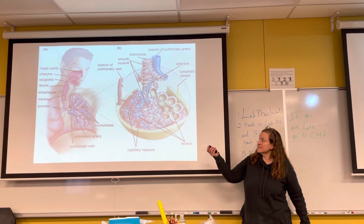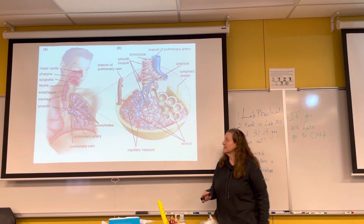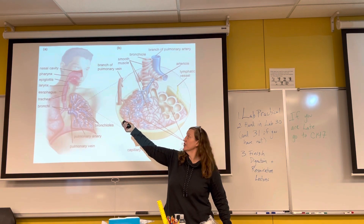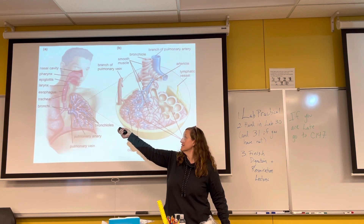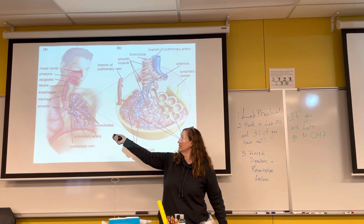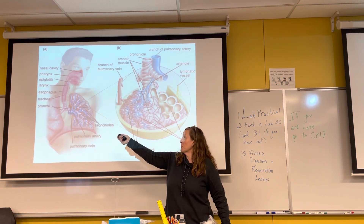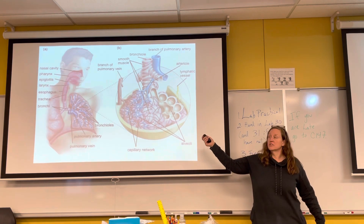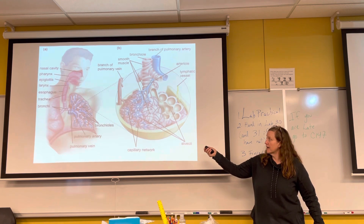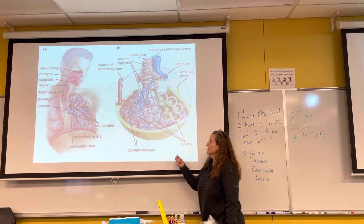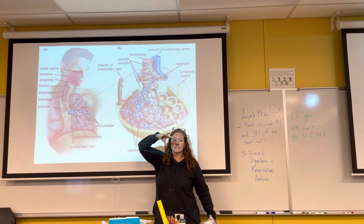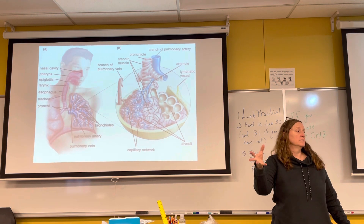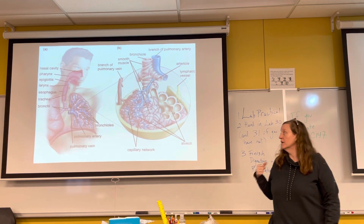This is what our respiratory system looks like — a lot of real estate taken up. Air goes in through the mouth and nose, past the pharynx, past the larynx, down the trachea, branches to each lung via the bronchi, into smaller bronchioles, and at the ends of the bronchioles you have millions of alveoli. Branches of capillaries surround the alveoli to allow for maximum diffusion of oxygen in and carbon dioxide out.